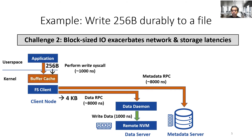The second challenge is that the client kernel buffer cache operates at large block granularity, exacerbating network and storage latencies for small IO. Small IO is common in modern applications including key-value stores and databases. The 256-byte write system call in this example is amplified to 4 kilobyte granularity by the buffer cache. If the associated block is not already in the cache, we have to fetch it first, and the associated IO and network amplification further increase latency and waste bandwidth.